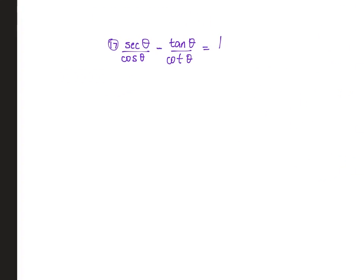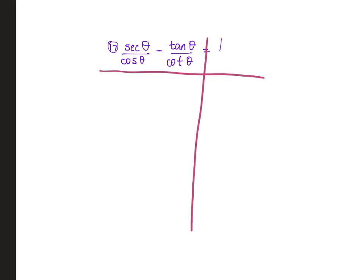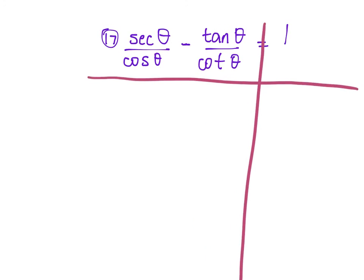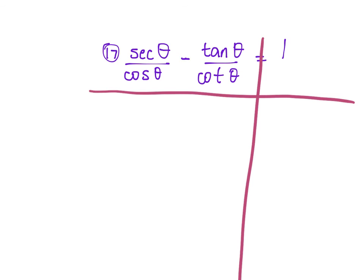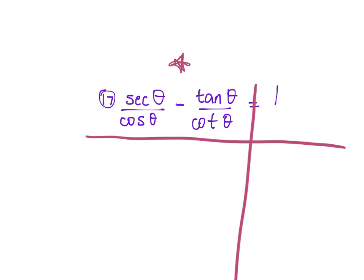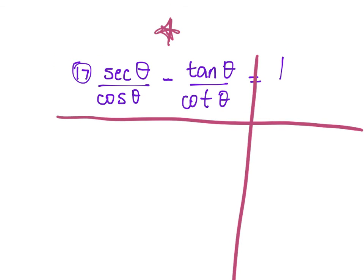Let's look at number 17. Change everything to sines and cosines first. Looking at this, we have a 1, so it's likely going to involve some identity. Secant θ over cosine: change secant to 1 over cosine. So we have 1/cosine θ over cosine θ/1. Keep, change, flip — multiply straight across — giving 1 over cosine², which is secant².